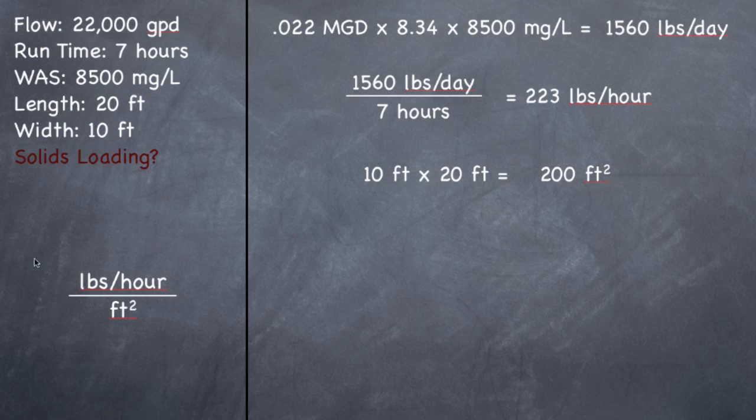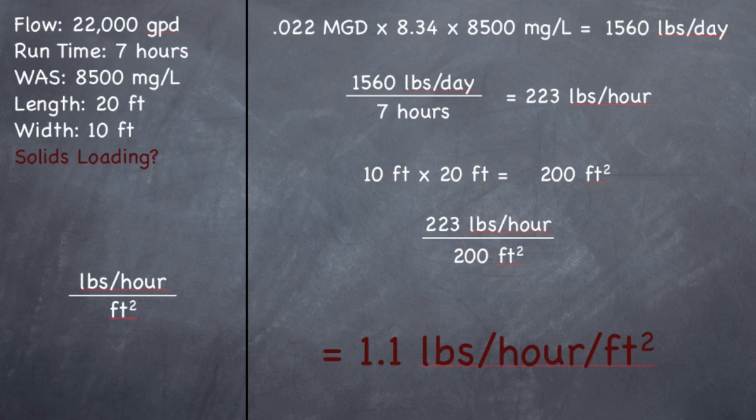Now just put it all together in this formula and you got your answer. 223 pounds per hour divided by 200 square feet gives you a solid loading of 1.1 pounds per hour per square foot. And that's a pretty typical number for a DAF unit. So fairly simple problem. Not much to it. And like I said, deductive reasoning can come into play with this. If you can look at this and really study what it's asking you, you can figure this out without knowing how to do it.